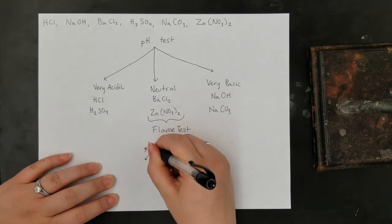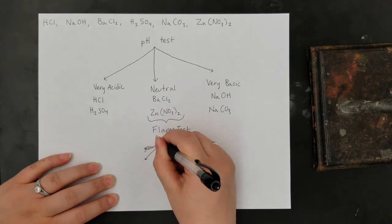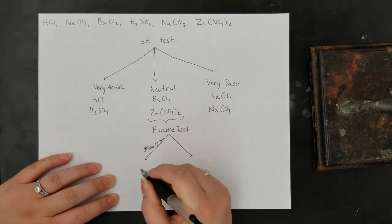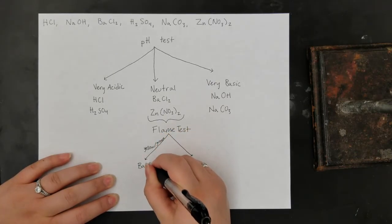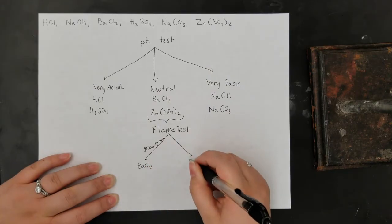In this case, we can determine which solution contains barium chloride and which contains zinc nitrate because barium produces a green-yellow flame when burned in a flame test.